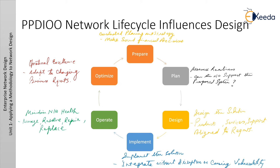The final phase is the Optimize phase. The optimize phase is based on proactive network management, the goal of which is to identify and resolve issues before real problems arise and the organization is affected. Reactive fault detection and corrective troubleshooting are necessary when proactive management cannot predict and mitigate failures. The optimize phase might lead to network redesign if too many network problems or errors arise, if performance does not meet expectations, or if new applications are identified to support organizational and technical requirements.